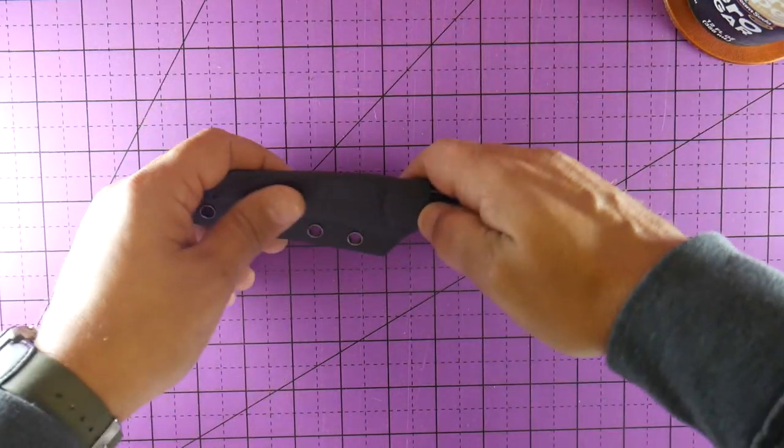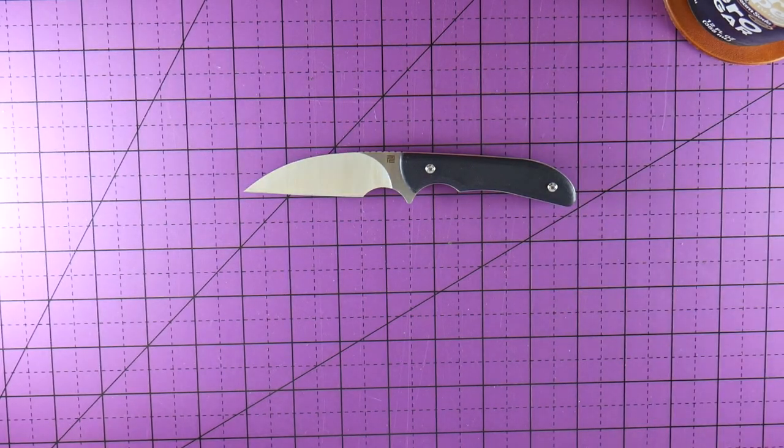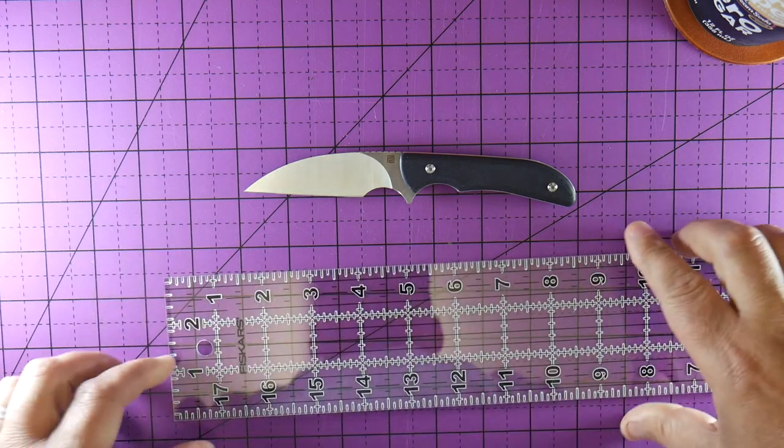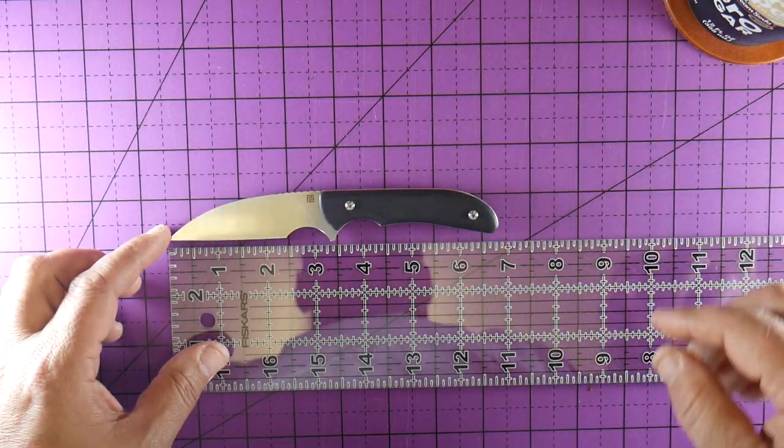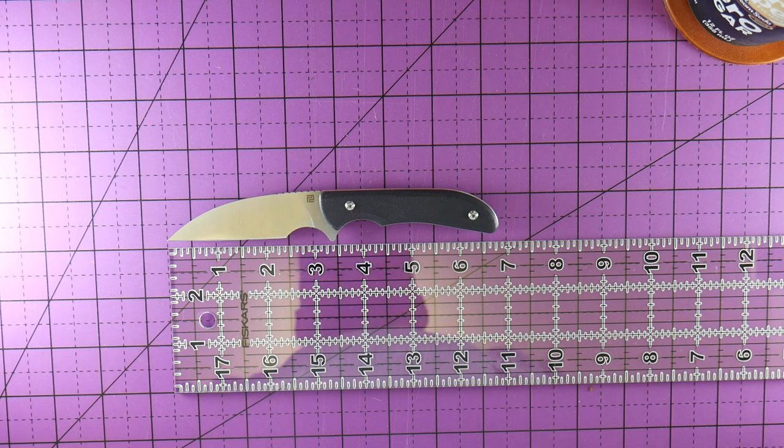Let's get into the length of it. The length of this bad boy, we're looking right at a total of six and three quarters inches. Tip of the blade to scale is going to be about three and an eighth.